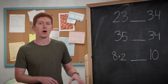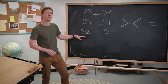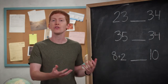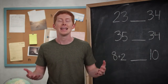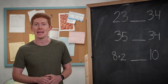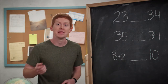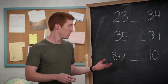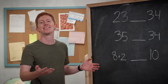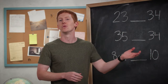Last one of these starter problems: 8 plus 2 — how does that compare to 10? Notice we don't just have two numbers like we did in our previous problems. Now we have to figure out what is 8 plus 2. Let's count on from 8, and we're going to count on two times: 8, 9, 10. Well, 8 plus 2 is 10. How does 10 compare to 10? It's the same, so we're going to use that equal sign. 10 equals 10.